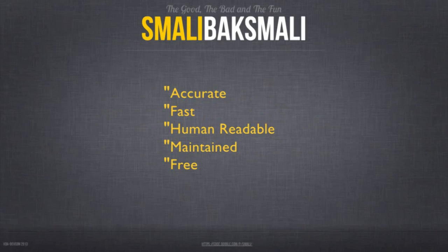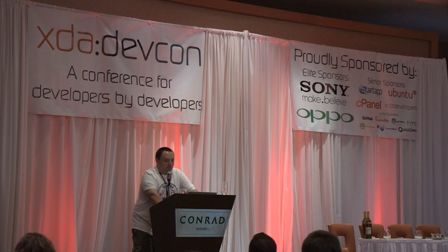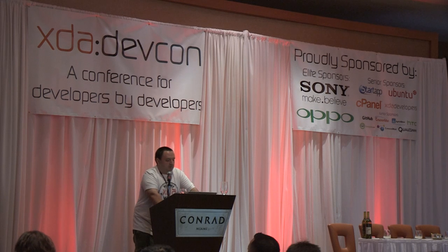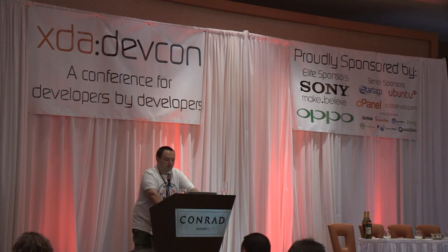The first one is from Jesus Freke — baksmali/smali. Most of you are probably familiar with it. From the site: 'baksmali is a disassembler for the DEX format used by the Dalvik Android virtual machine. The syntax is loosely based on the Jasmin and DEX syntaxes.' It supports the full functionality of the DEX format. Smali is often used because of its accuracy and the fact that you can make changes and recompile with one tool. Smali's output is easy to read with some experience, the project is well maintained, and best of all it's free.